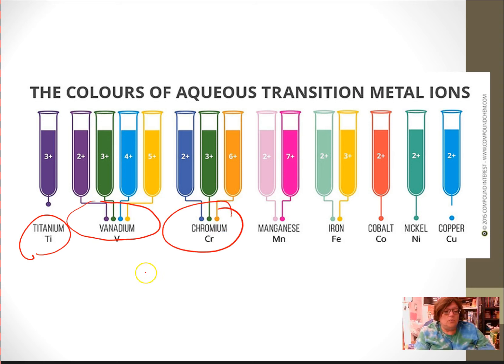Iron, a blue or a yellow, or a green or a yellow. Cobalt, a red. Nickel, a green. And copper, a blue. Those are all properties of transition metals.